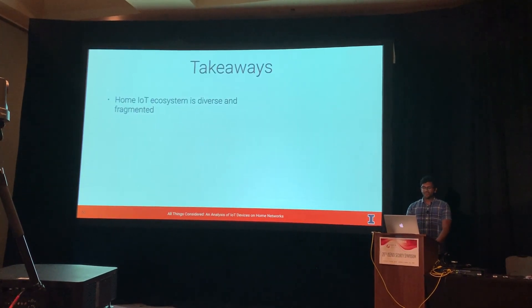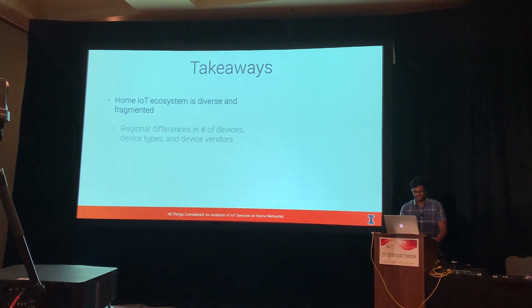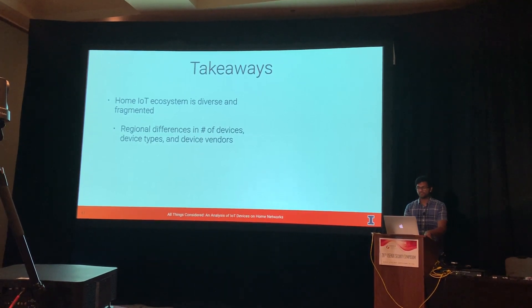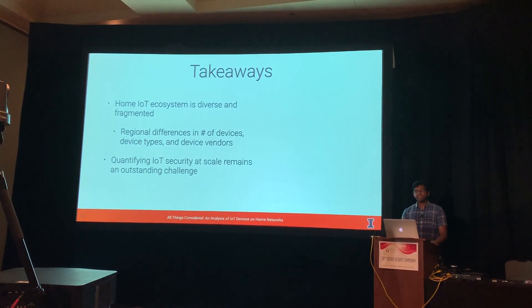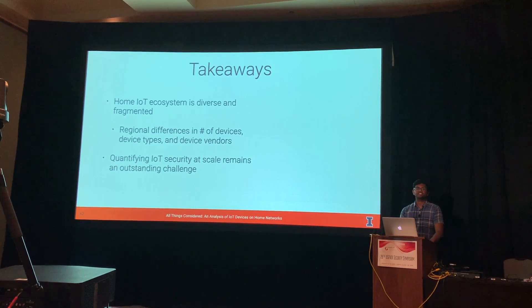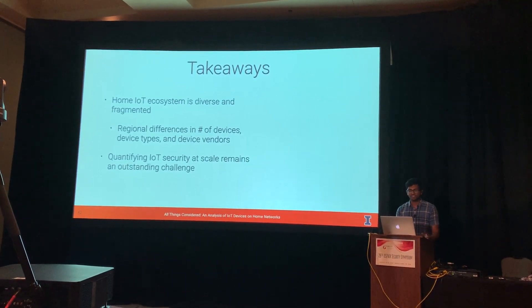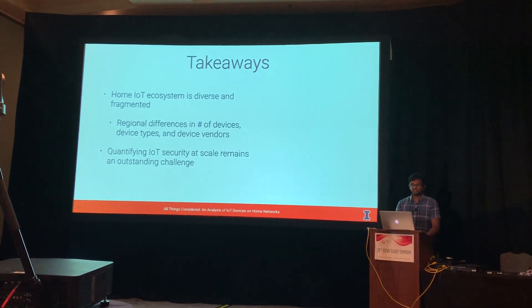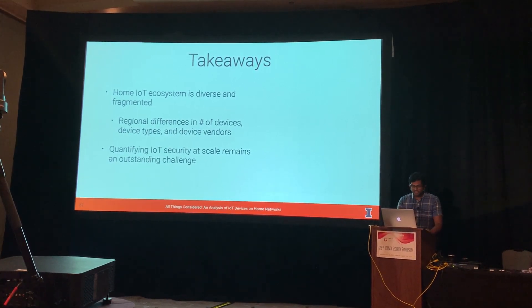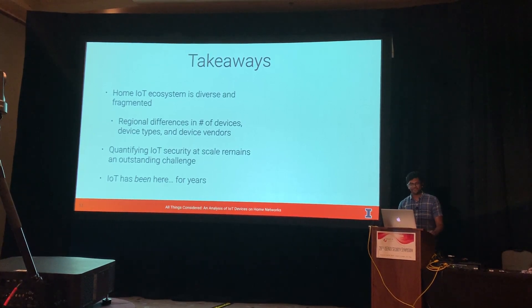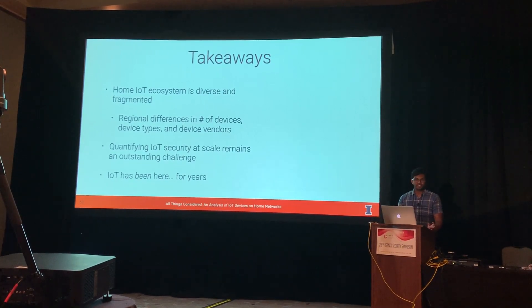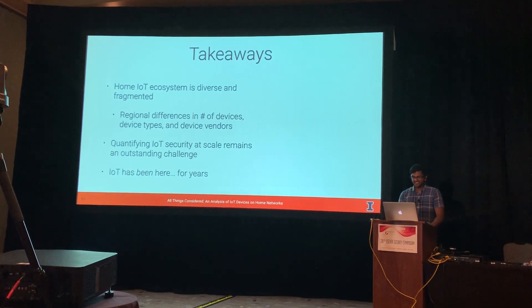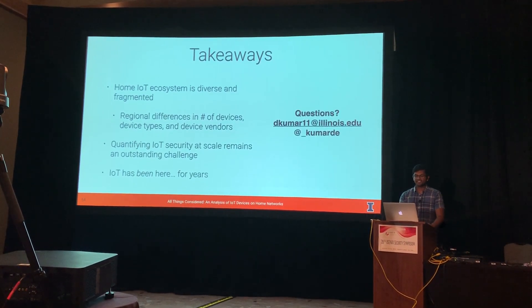So what are we learning? The home IoT ecosystem is diverse and fragmented. Looking at this globally, there are regional differences at almost every level — the number of devices, the device types, and the vendors preferred. This fragmented ecosystem leads to challenges in quantifying security, and there's no silver bullet. In this study we looked at the lowest common denominator — weak passwords — but there is a lot still unknown in order to measure the security of these devices at scale. And lastly, IoT has actually been here for years. As we investigate new and fun devices and break them in cool ways, let's not forget all the other devices that exist and are still running. Thank you — I'm happy to take any questions.